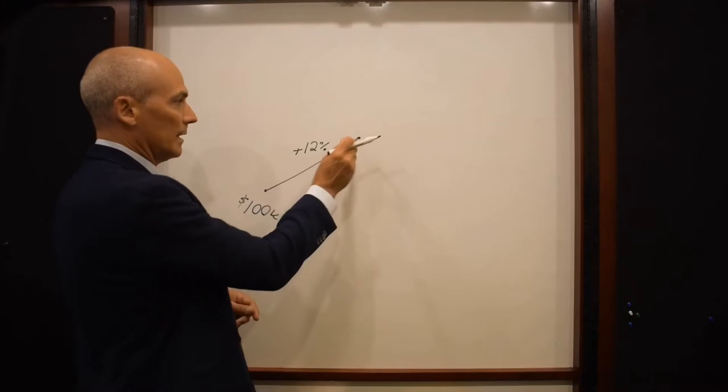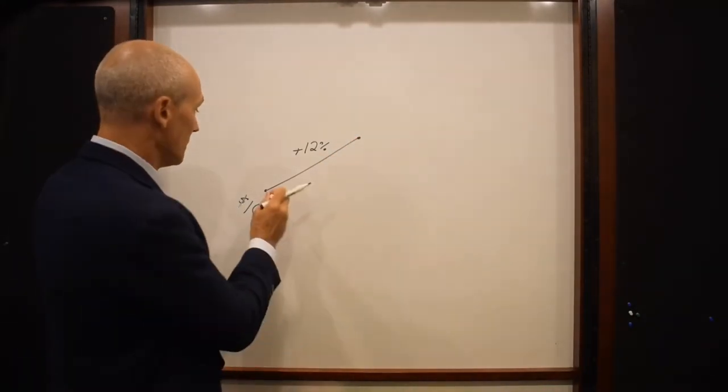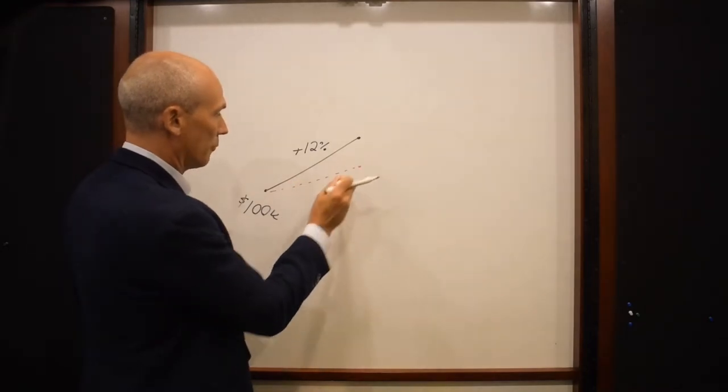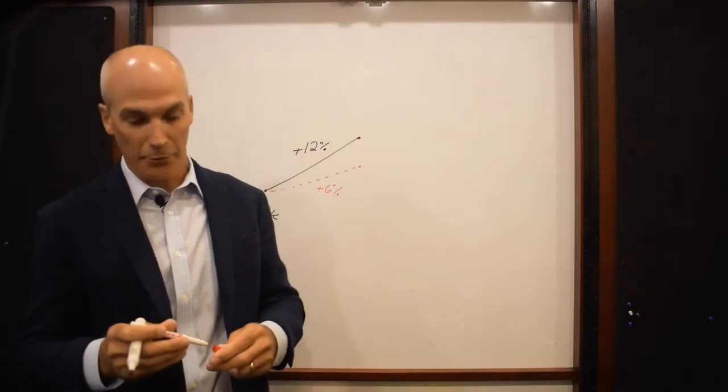So if the stock market goes up 12% over the course of the 12-month period, you're not going to receive a 12% interest credit. You're going to receive a 6% interest credit.